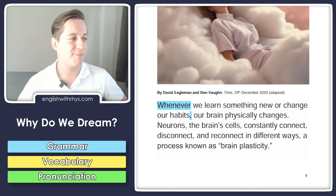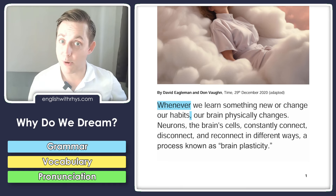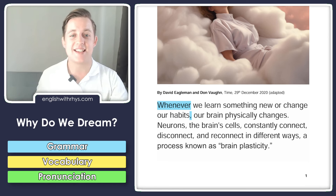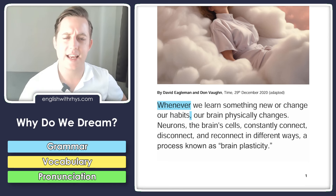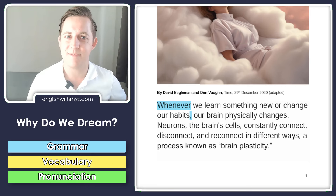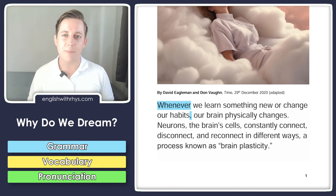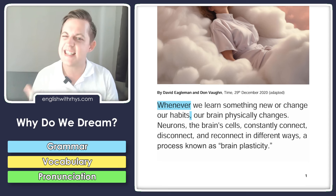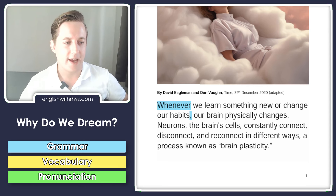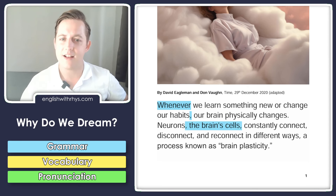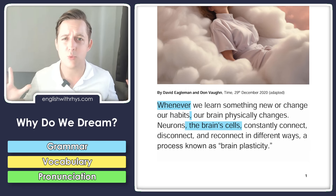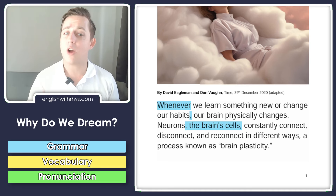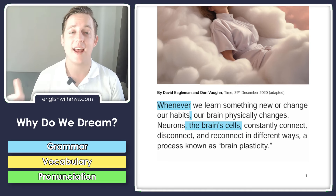Neurons, the brain cells, constantly connect, disconnect, and reconnect in different ways — a process known as brain plasticity. I want to show you another grammar tip. We could take out 'the brain cells' and the sentence would still work: neurons constantly connect, disconnect, and reconnect.